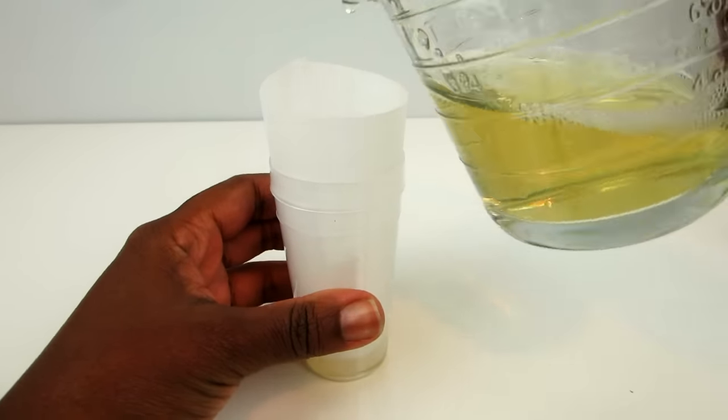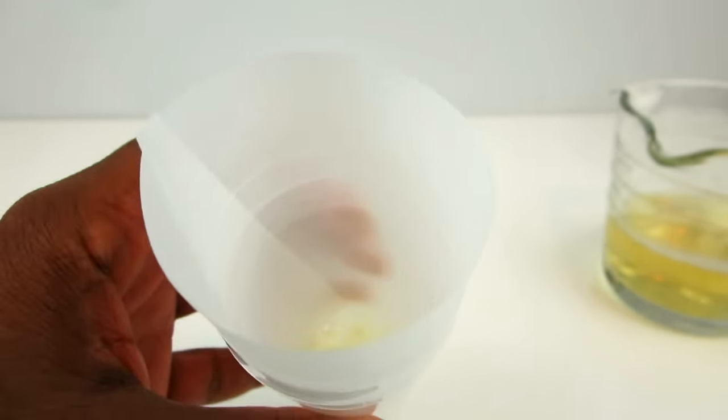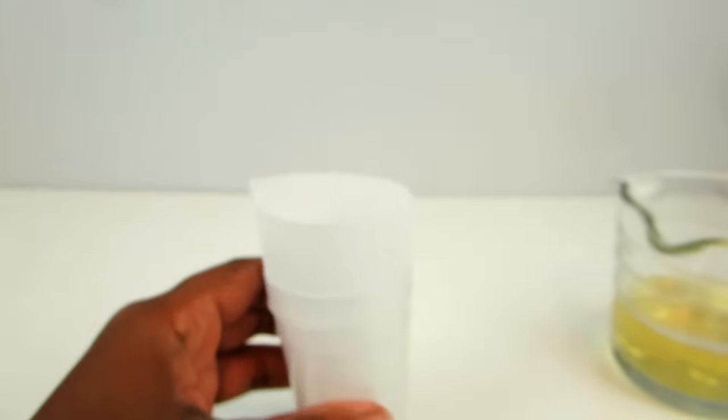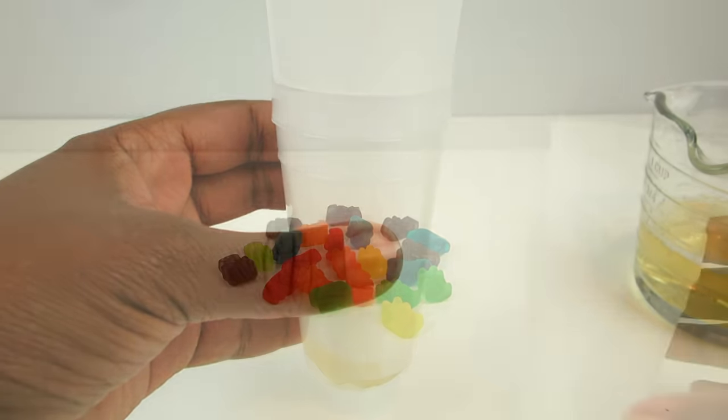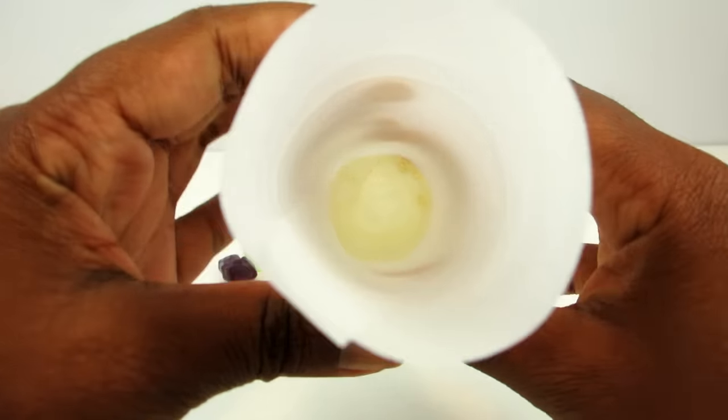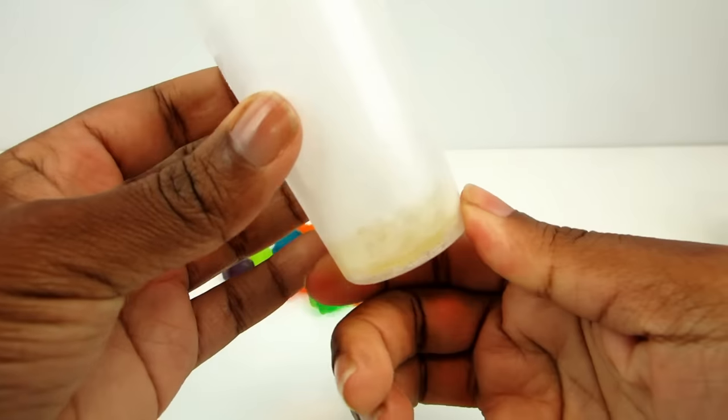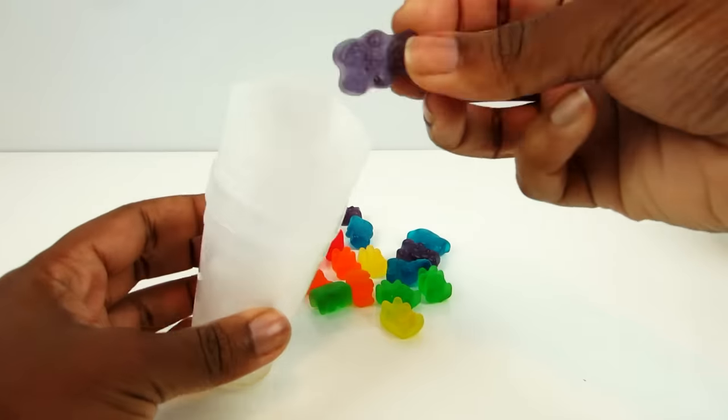And then with the gelatin freezy mix, I poured a little bit in and I put it in the freezer for about 20 minutes. Then I poured some more of the liquid in and I put some gummy bears in it too.